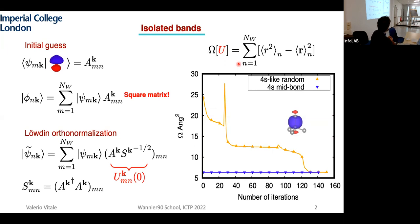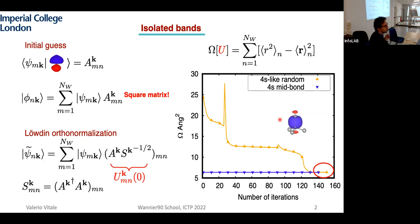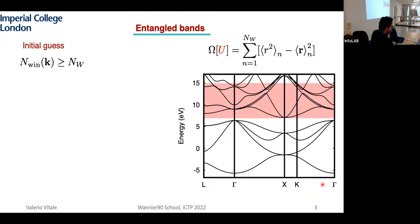This works quite robustly for a simple system with a few isolated bands. You don't really need to know the initial projections. Whether you start from four s-orbitals in the middle of the bond for silicon, or from four random functions in the unit cell, you still get to the minimum of the spread functional. The minimum is quite shallow, you have a large basin, and you end up at the global minimum.